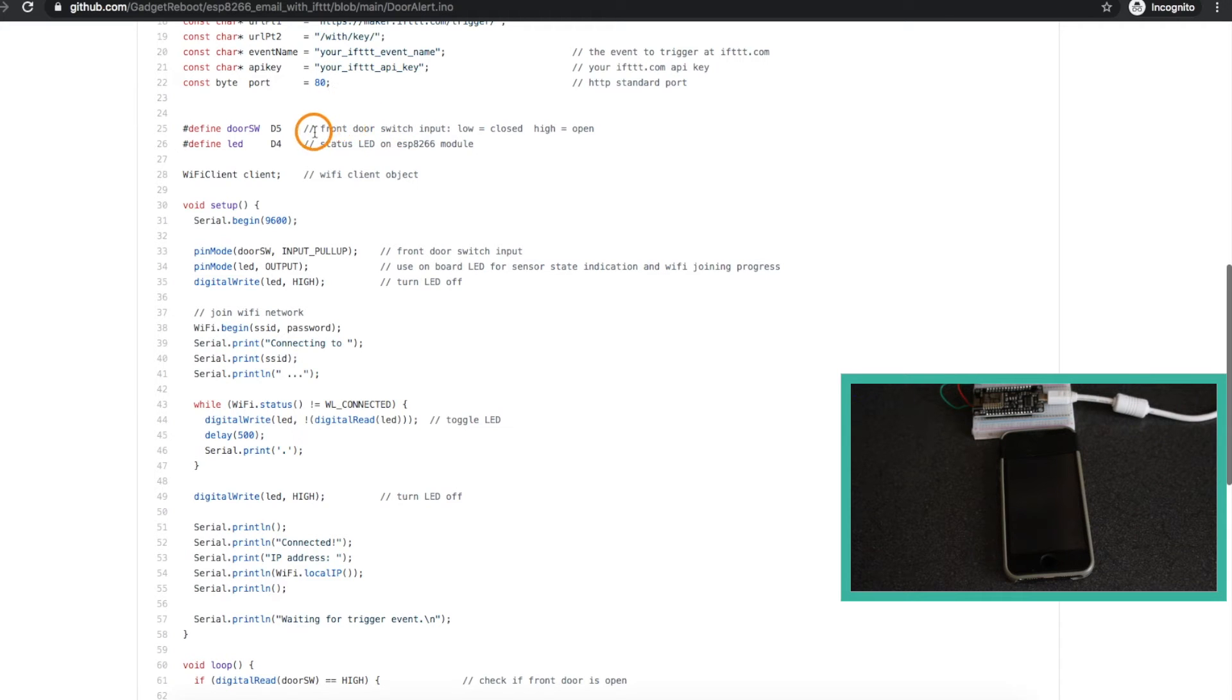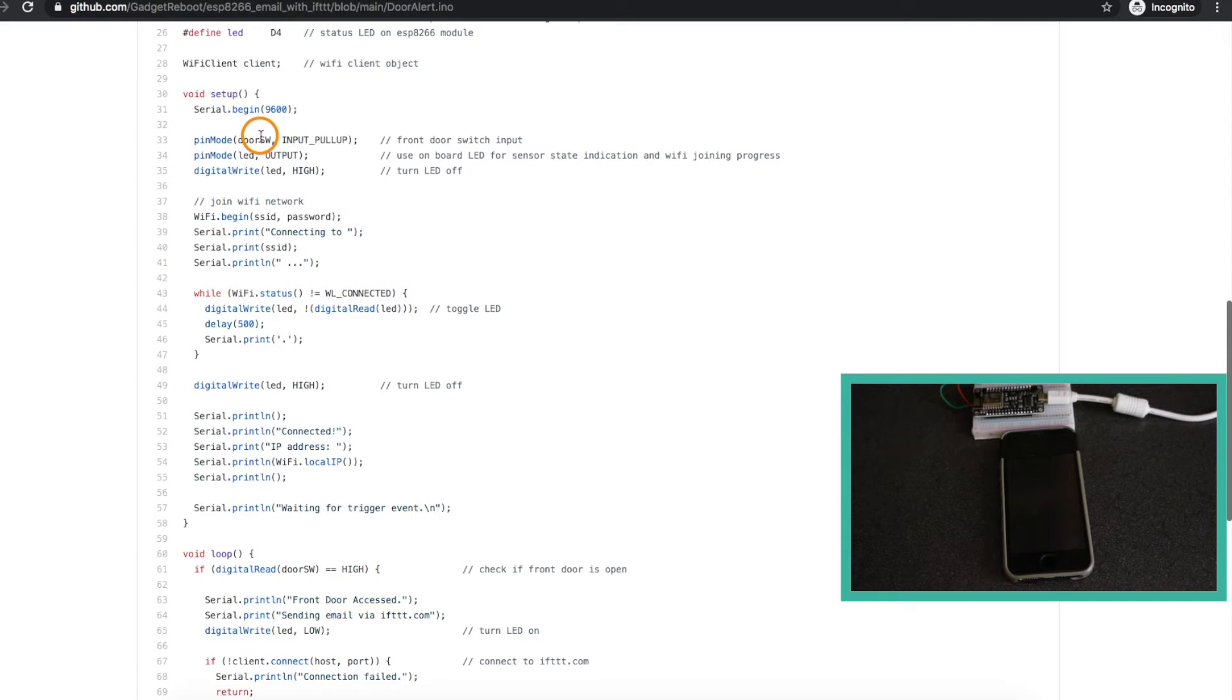In this sketch, I am hooked up to my front door switch. So I'm using GPIO-D5. And whenever this switch has been opened, I want to get an email alert. And I'm making use of the onboard ESP8266 LED on GPIO-D4. So while I'm joining the network, it will blink to show me that it's trying to join, and it will stay off when I have joined. Standard setup things for Wi-Fi. My door switch is an input pin with a pull-up built in. So the switch connects it to ground or allows the ESP to pull it up. Then the standard code for joining a Wi-Fi network. And while waiting to join, we're printing out status indicator dots in the serial monitor and blinking the onboard LED.